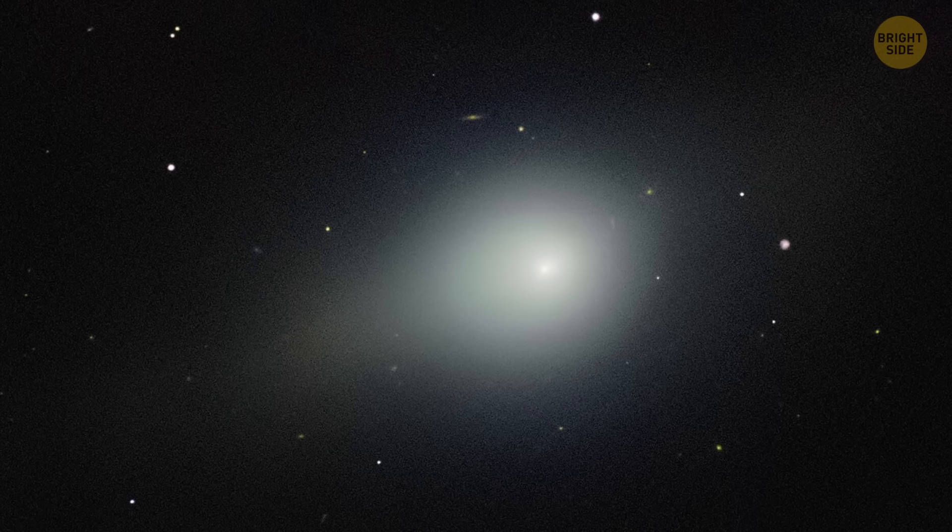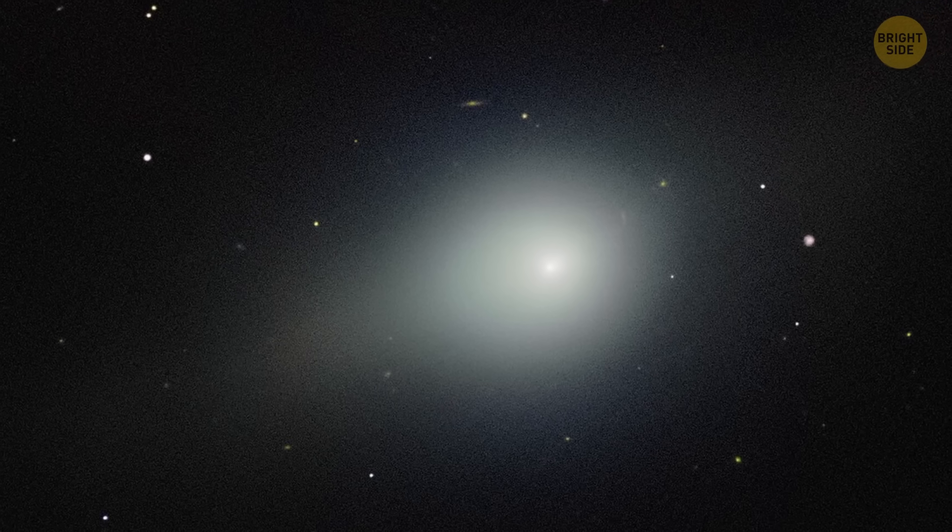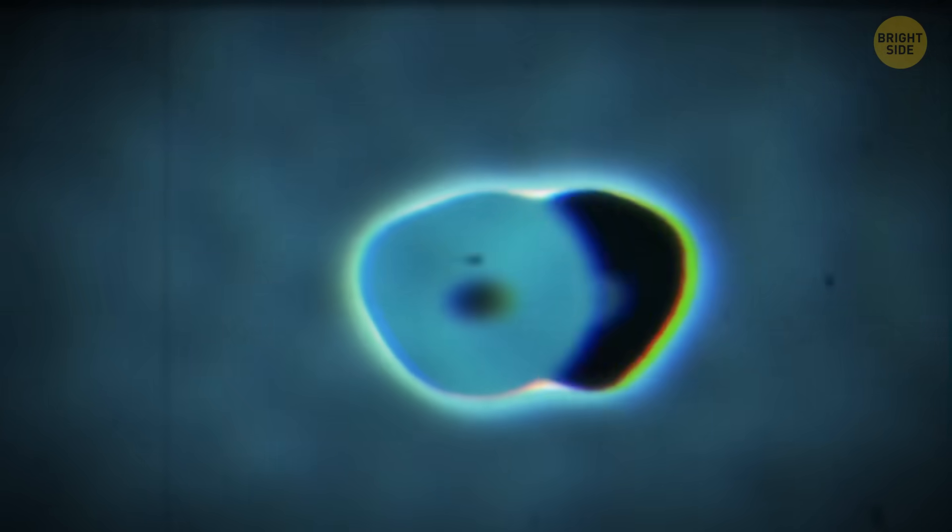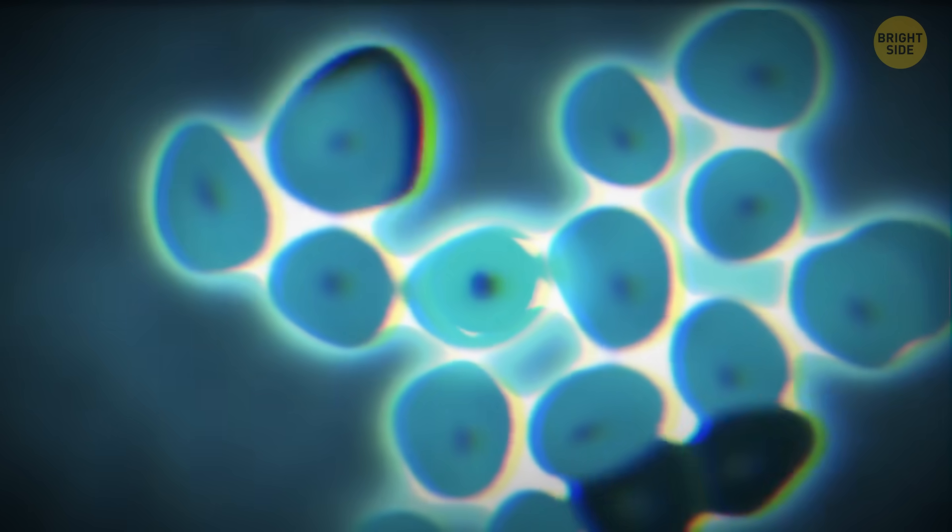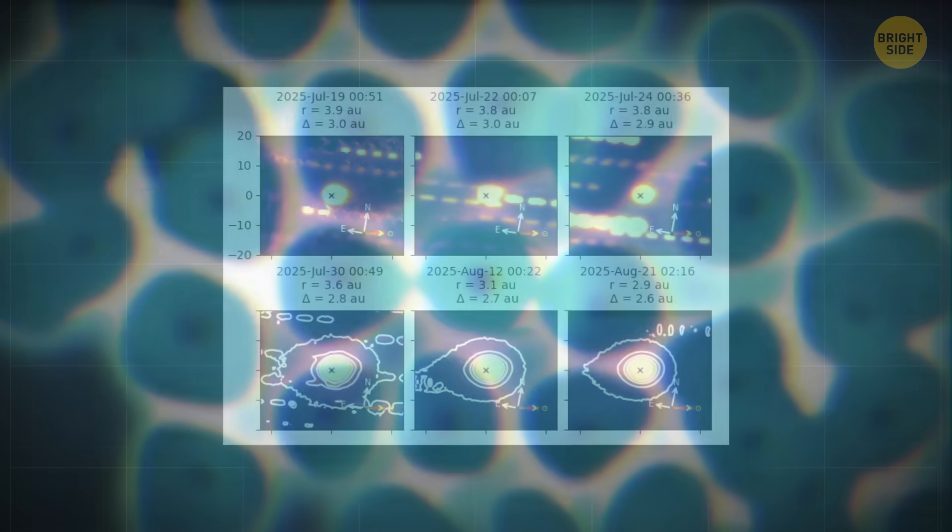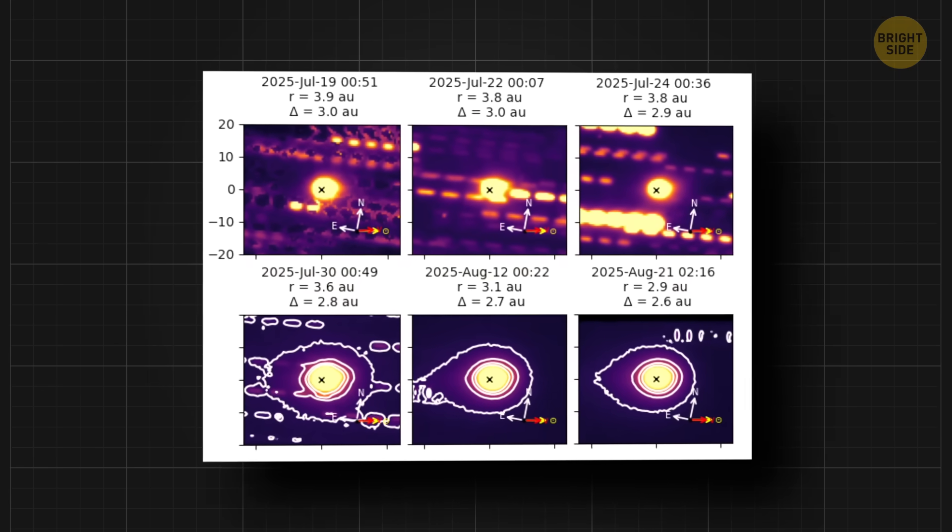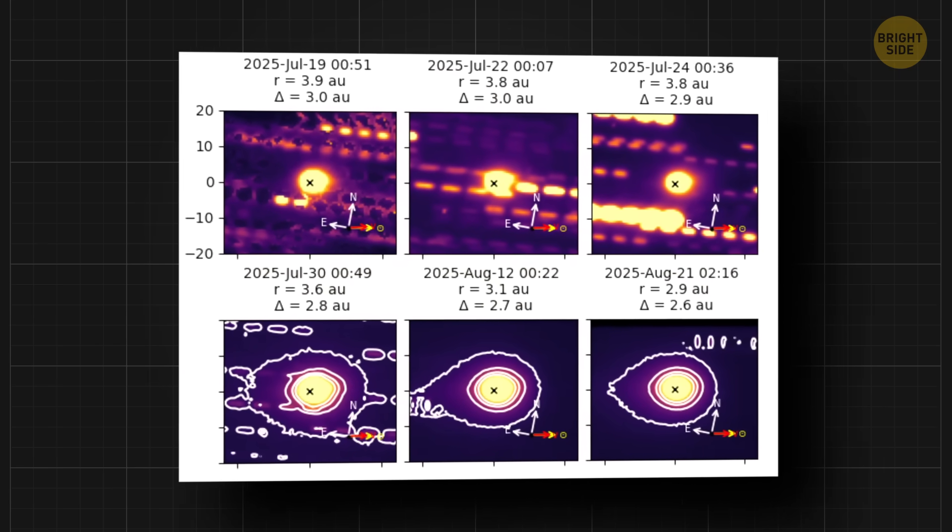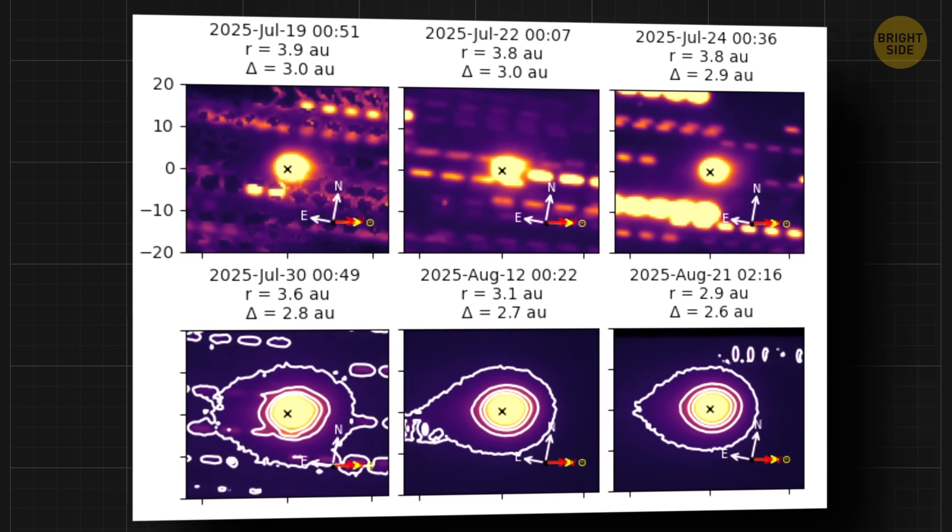At first glance, it almost looks like a tiny cell, right? Like something you'd see under a microscope. With a bright center, like a nucleus, and this fuzzy outer layer. But when we look at it from a different angle, the mystery clears up. That glow is actually a comet tail.